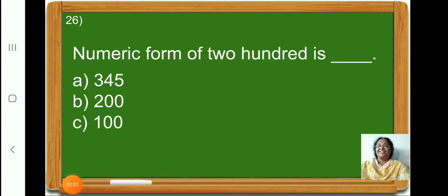Children, what is the numeric form of two hundred? Yes, 200. So, let us put a tick on option B, 200.